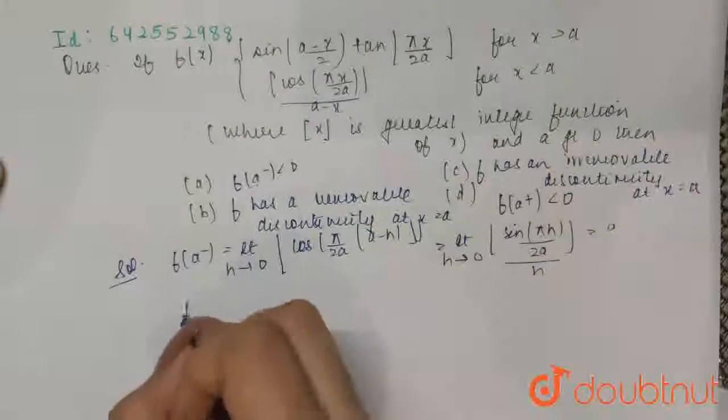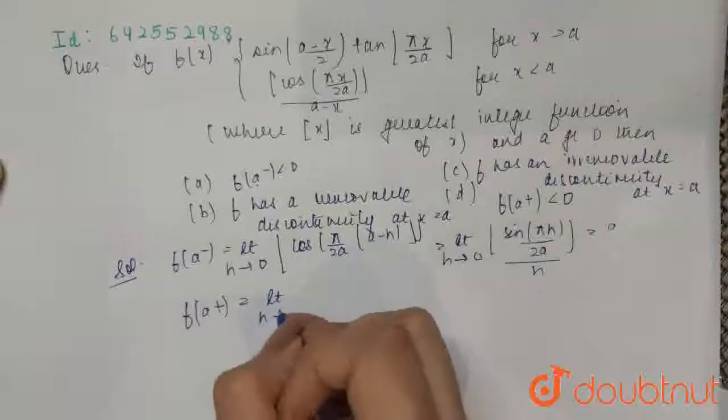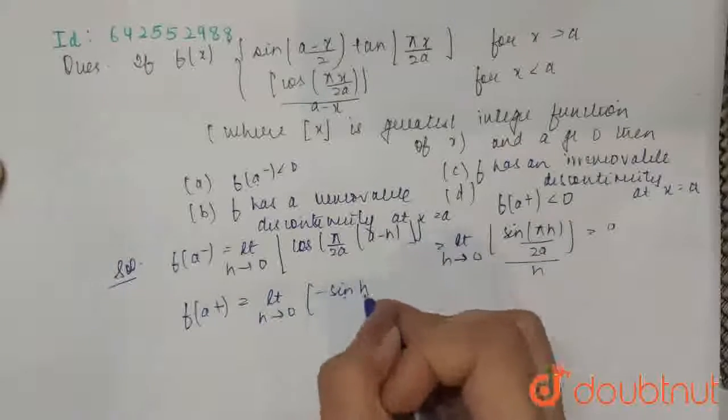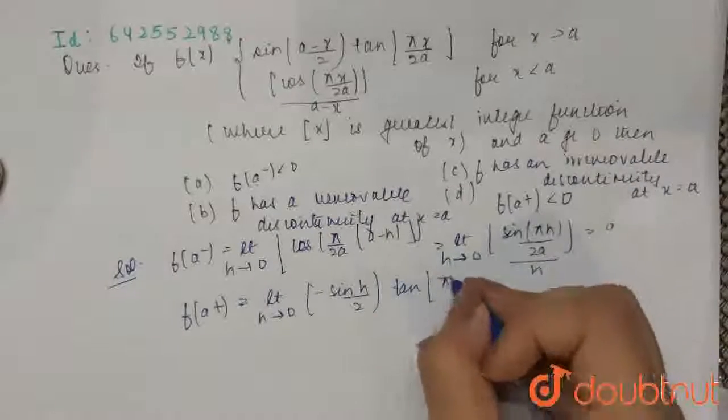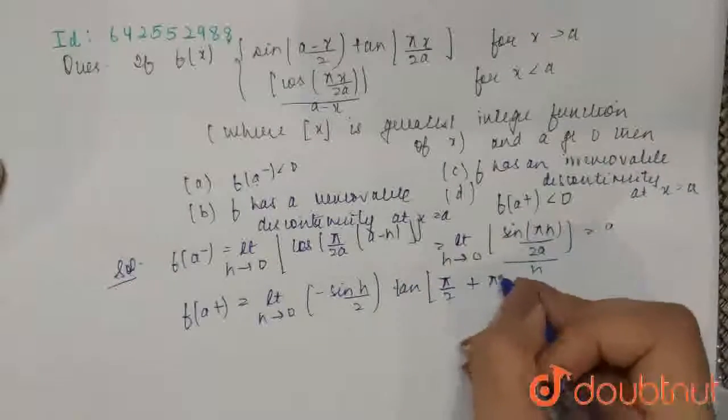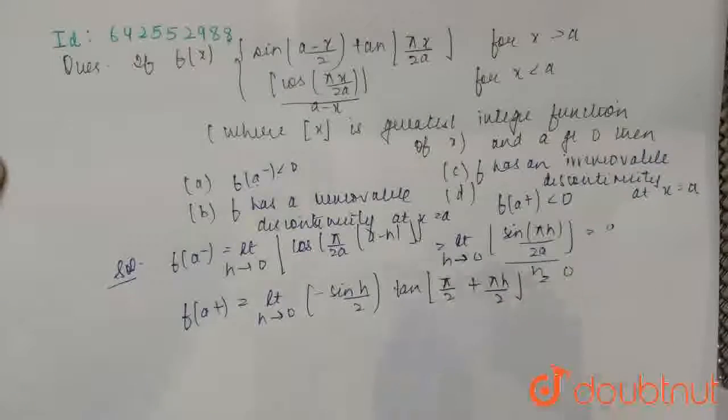Now we will find out f of a plus. This is limit h goes to 0, negative sin h by 2 times tan of (pi by 2 plus pi h by 2). This will also be 0.